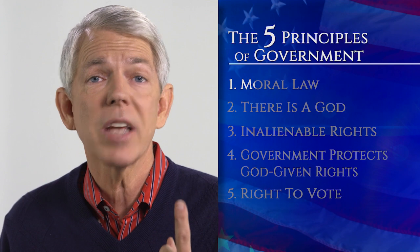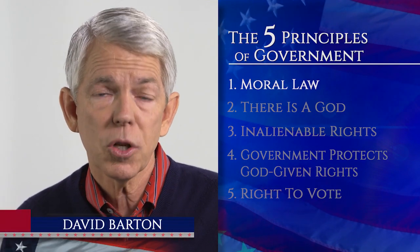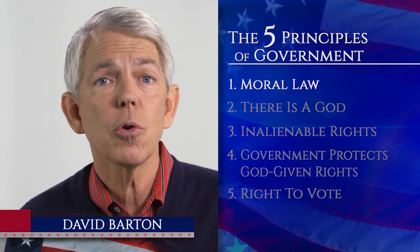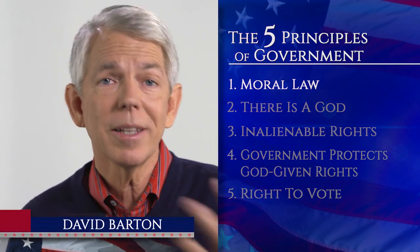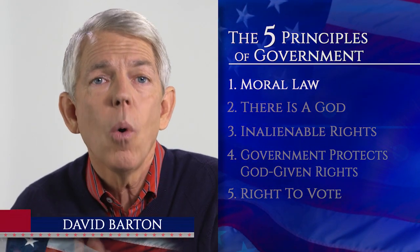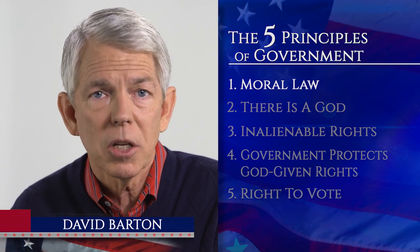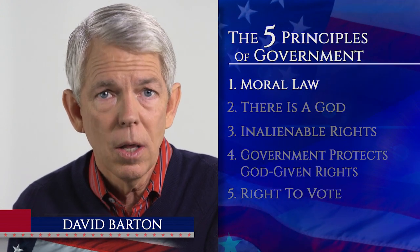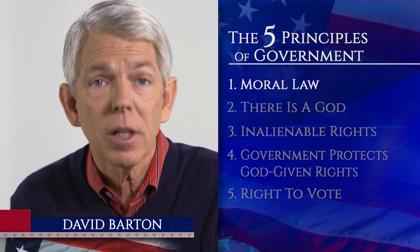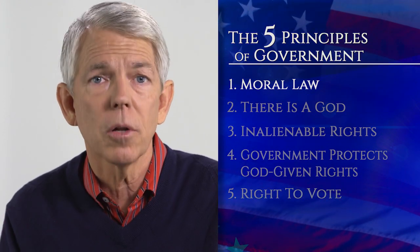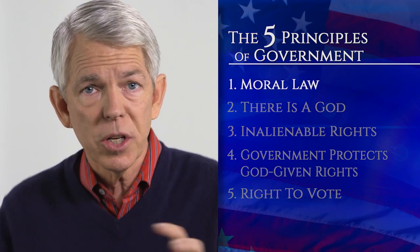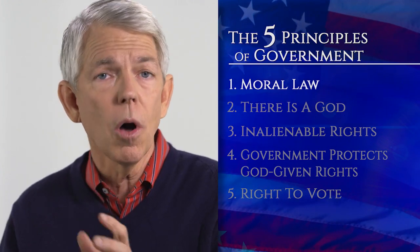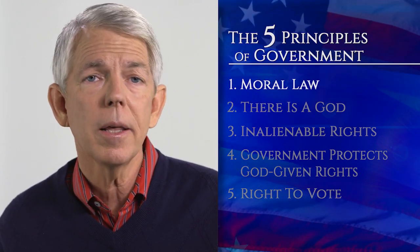The first principle says that there is a moral law. Between the Bible and nature, we know what right and wrong is — we can tell. God tells us clearly: don't steal, don't kill, don't perjure. That's a moral law. So we start with a moral law that comes from God.